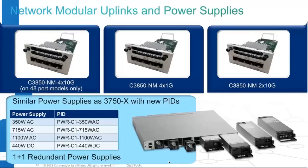Let's look at the uplink modules. With 3850 we have 4x10G network uplink modules. The first module, 4x10G on the left, can interoperate as 4x1G as well — this module is only supported on 48-port, because delivering line rate for all four 10G ports requires two UADP ASICs. The second uplink module, 4x1G, is supported on both 24-port and 48-port switches. The third is 2x10G, again supported on both 24-port and 48-port switches.